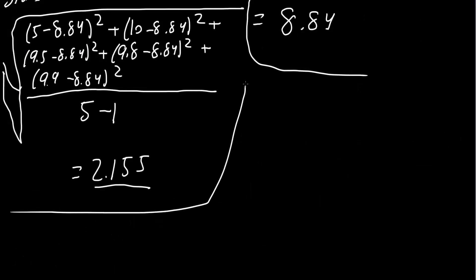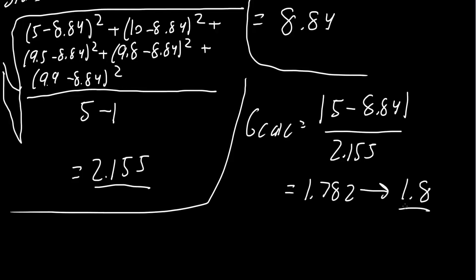Now we will finally calculate Gcalc. Gcalc equals the absolute value of 5 minus 8.84, divided by 2.155. We get 1.782, which is about 1.8. This is Gcalc.